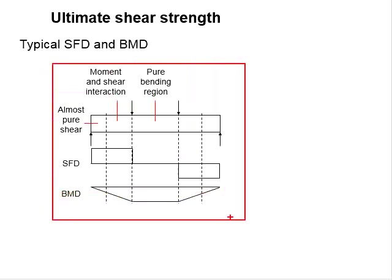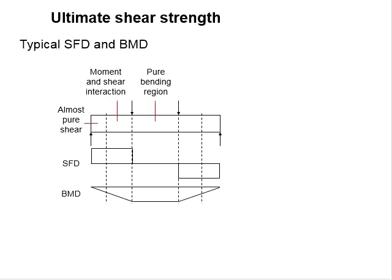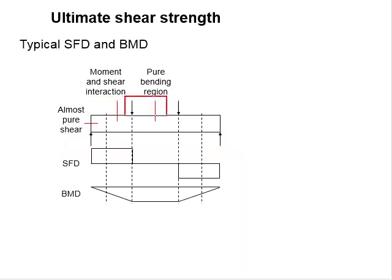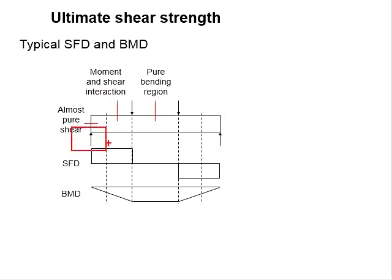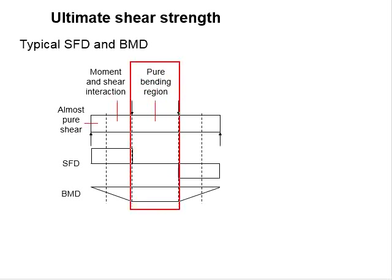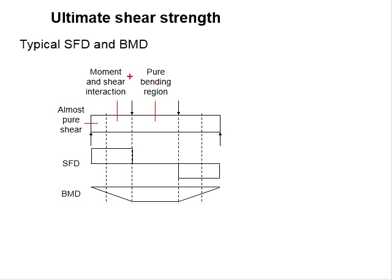This figure shows a typical shear force diagram and bending moment diagram of a beam. This beam is simply supported and subjected to two-point loads. Based on the reactions obtained, we are able to produce the shear force diagram, which subsequently the bending moment diagram is produced. The beam can be separated into three main sections. The mid-span region represents a condition of high moment but low shear force — almost pure bending.